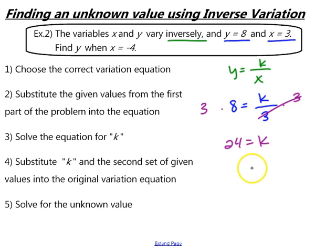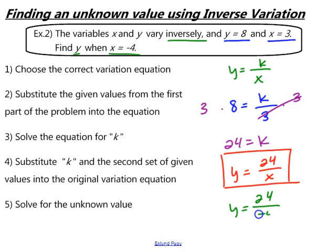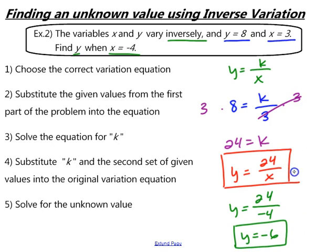Next, we write our equation that relates the variables: y equals 24 over x. This equation relates all of our values in this problem. Then we take the second given value, x equals negative 4, to solve for y. So y equals 24 over negative 4. Then 24 divided by negative 4 gives us y equals negative 6. Here is the equation that relates our variables, and here is the unknown value we were asked to solve for.